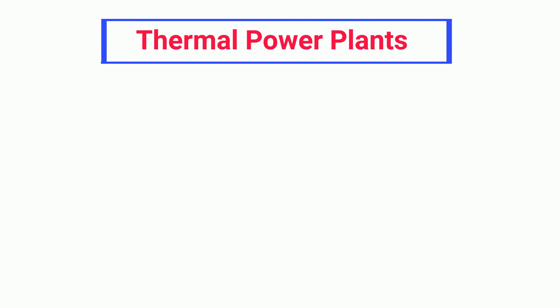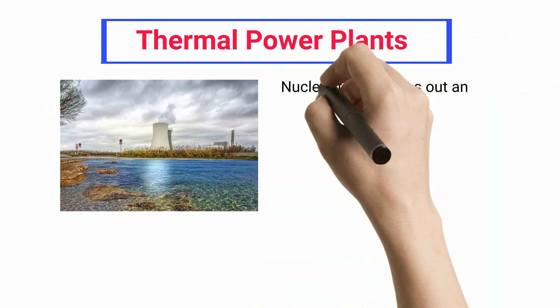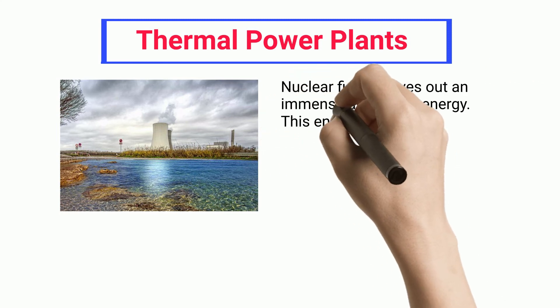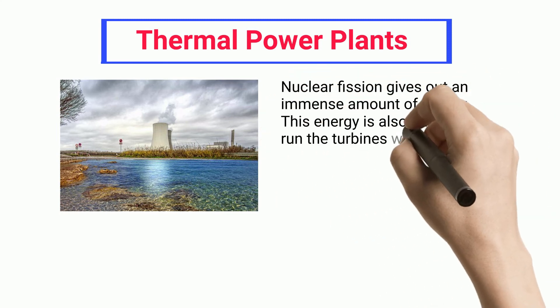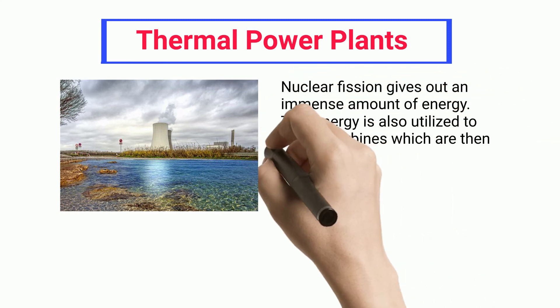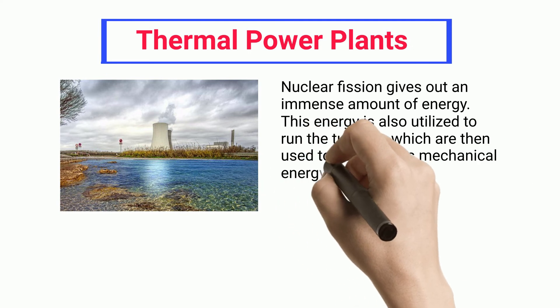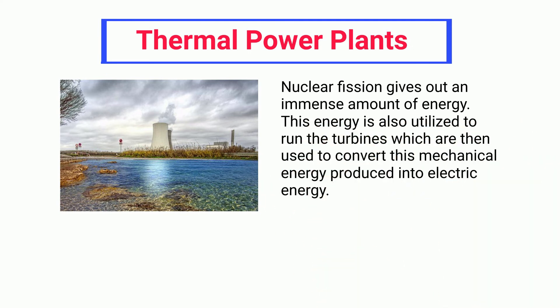Thermal power plants: nuclear fission gives out an immense amount of energy. This energy is utilized to run turbines, which are then used to convert the mechanical energy produced into electric energy.